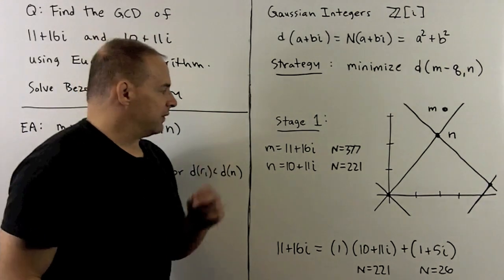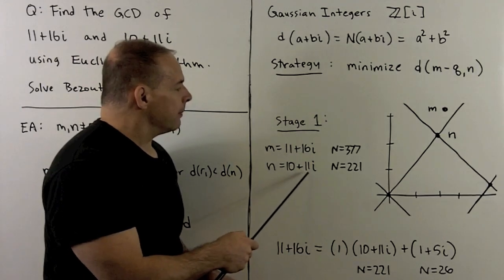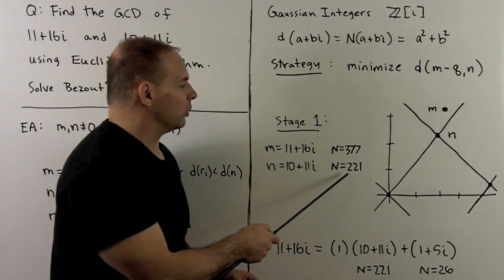Now, in our specific case, where I have m equal to 11 plus 16i, n equal to 10 plus 11i, the N's are 377 and 221.